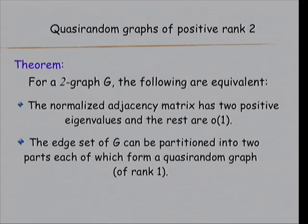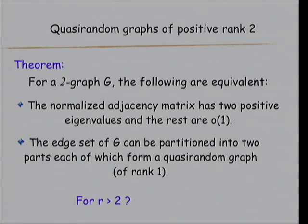One direction is very easy: if you overlap two quasi-random graphs, you go there. The other direction is the part you have to work on. And I got some of my students to struggle with the messier, bigger cases.